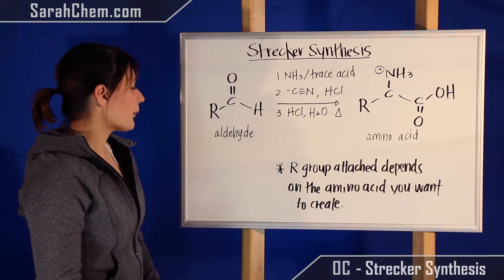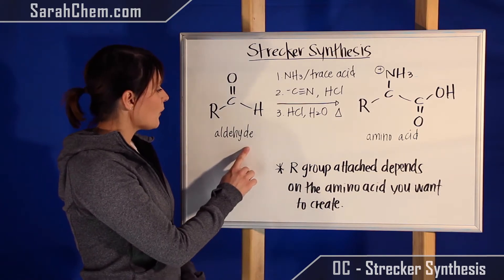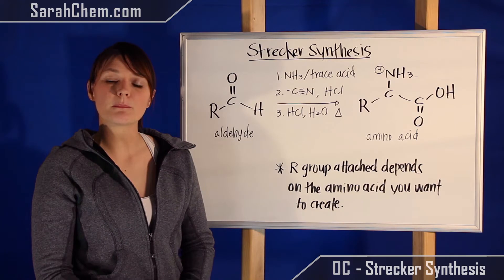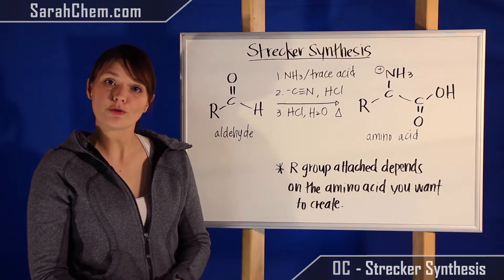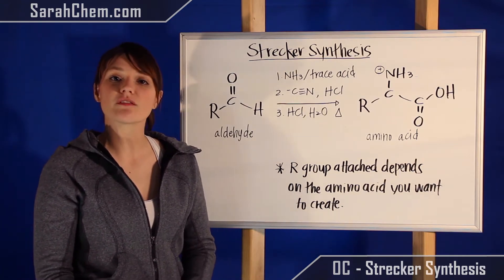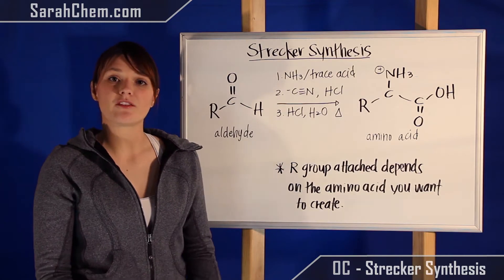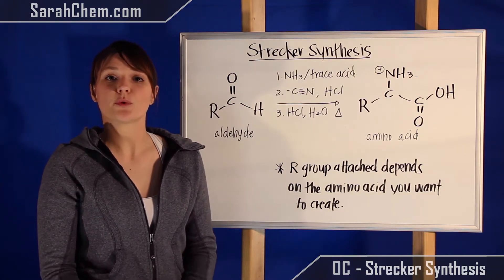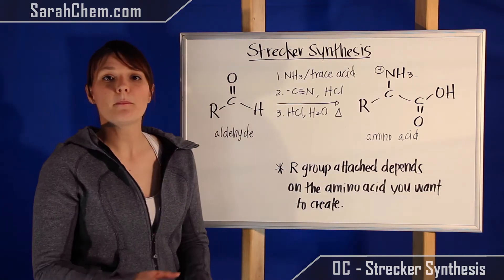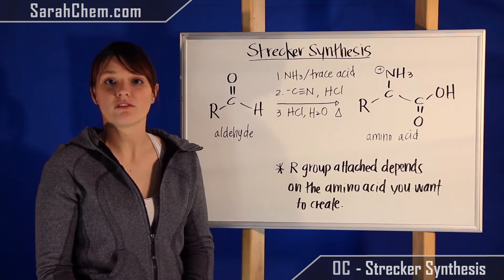So we take a look at the board here. We have our aldehyde. I want to mention that the R group on the aldehyde is really important because that R group's identity will dictate which of the amino acids you're going to form. So if you wanted to make valine, you would just have to make sure that this R group matches the R group side chain on valine.